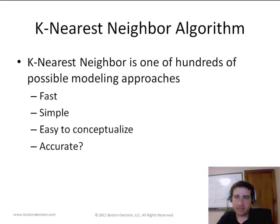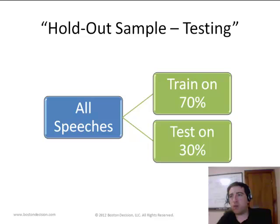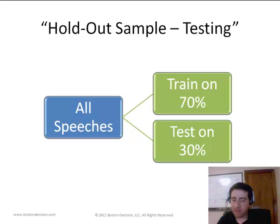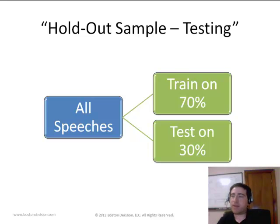The question is: is it accurate? To test whether the algorithm works, we take a set of the speeches and set them aside — not telling the machine who said them. This is called a holdout sample. We have about 70 speeches total. We take 70% and give them to the algorithm along with the name of who said them. The remaining 30% we give to the algorithm and have it make a prediction, but we don't tell it who actually said the speech. Only after it creates a prediction do we compare it to who we actually know said the speech, to measure accuracy.